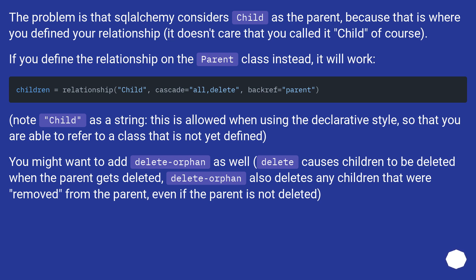Note that 'child' is used as a string. This is allowed when using the declarative style, so that you are able to refer to a class that is not yet defined. You might want to add 'delete-orphan' as well. 'delete' causes children to be deleted when the parent gets deleted. 'delete-orphan' also deletes children that were removed from the parent, even if the parent is not deleted.